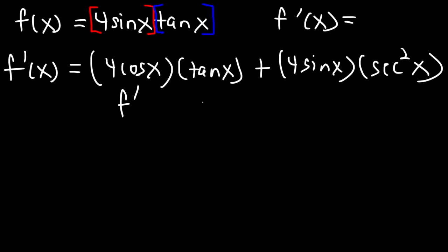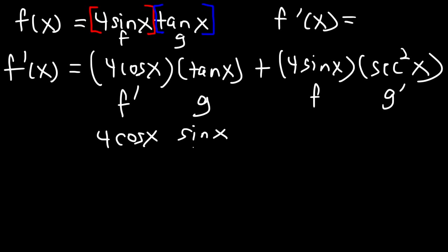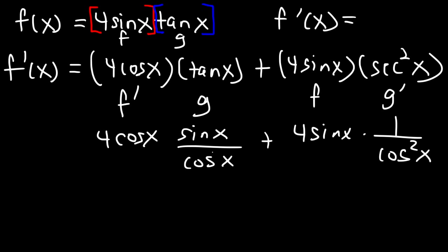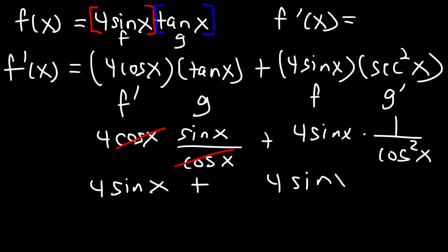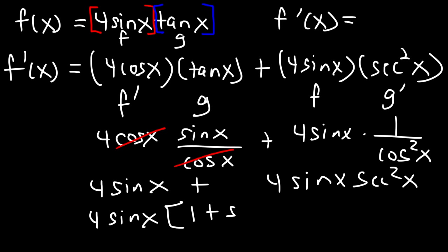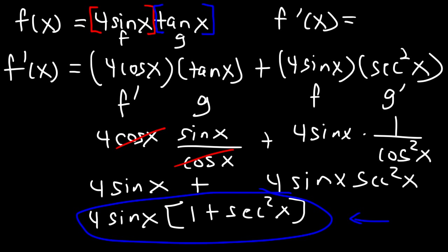So f prime is 4 cos x, g is tangent x unchanged, then f is unchanged and g prime is secant squared. Now we'll simplify the expression. Tangent is sine divided by cosine, and secant squared is 1 over cosine squared. I can cancel cosine, leaving 4 sine x. Actually, I'm going to factor out 4 sine x, and I'm left with 1 plus secant squared. So that's f prime, the first derivative of 4 sine x tangent x.